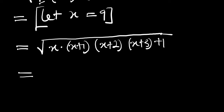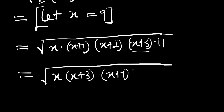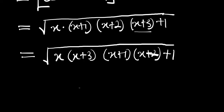Let's try and rearrange this. We can have the square root of x into x plus 3, then into x plus 1 and x plus 2, then finally plus 1.